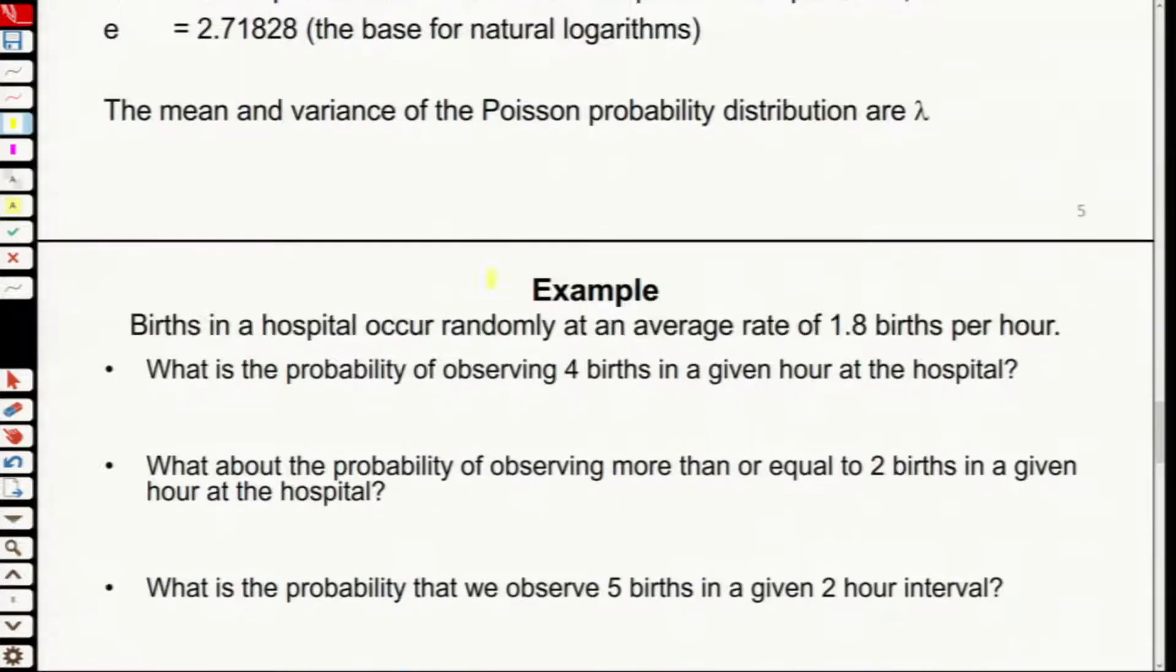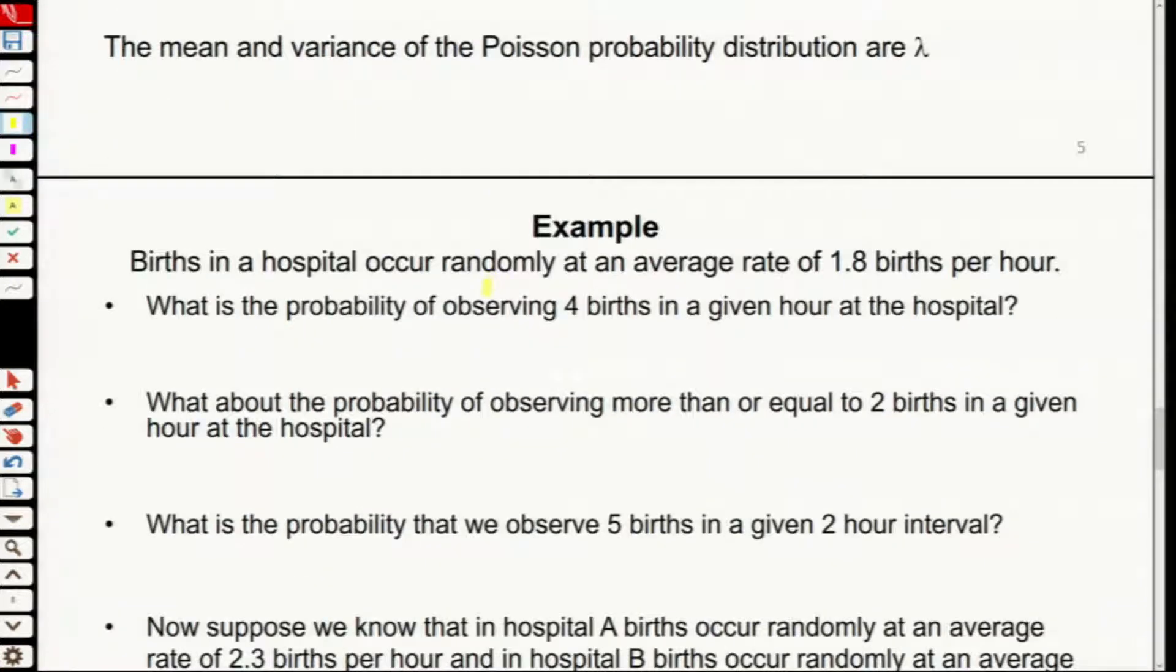Now let's have a look at an example. Suppose we're going to use Poisson distribution to model this. Births in a hospital occur randomly at an average rate of 1.8 births per hour.